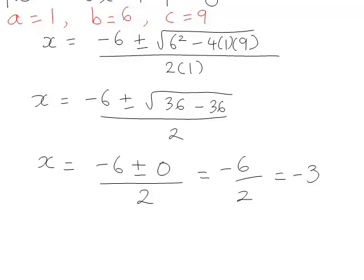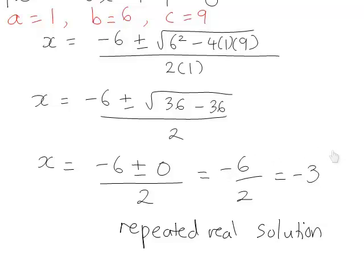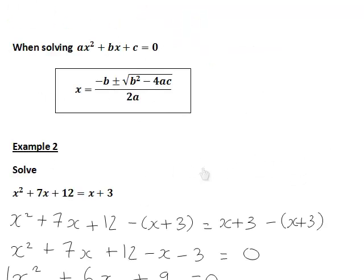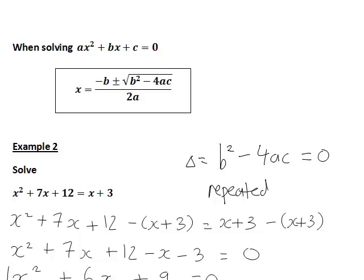So this is a repeated real solution to the quadratic equation. This occurred because the expression under the square root sign, b squared minus 4ac, was equal to zero — that is, the discriminant delta equals zero. Whenever this happens for a quadratic, it means we have a repeated real solution.